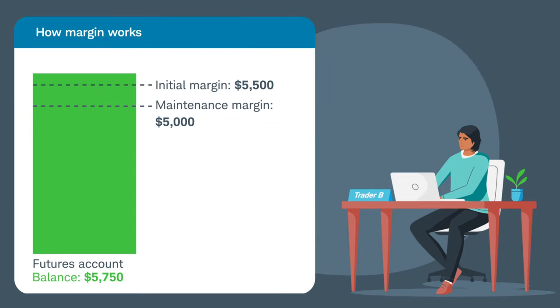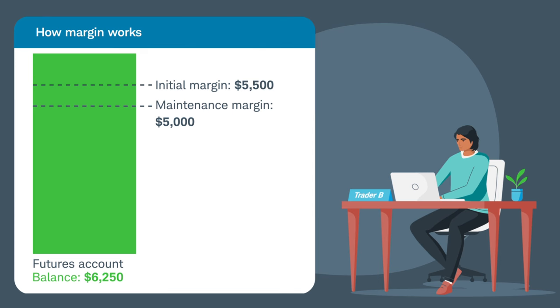Trader B is pretty happy with his trade so far. He just gained another $500, raising his account balance to $6,250.